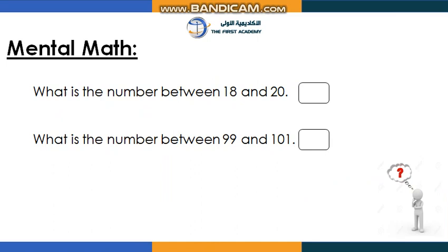Mental math time! Mental math will help you to be so clever and smart. Please take your time and read the questions carefully. Here's the first one: what is the number between 18 and 20? I'll give you some time to think. The answer is 19 — correct, excellent! So 18, 19, and then 20.